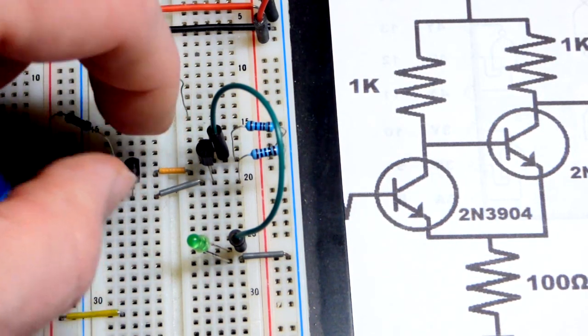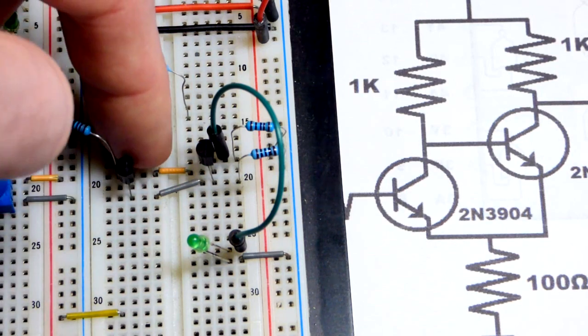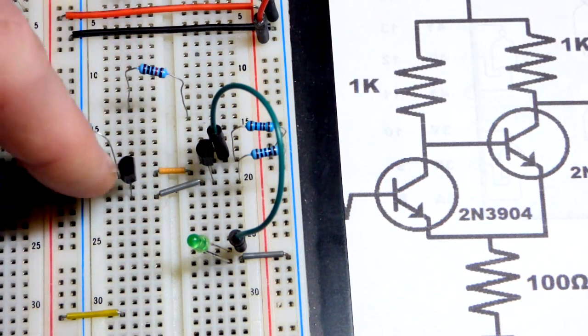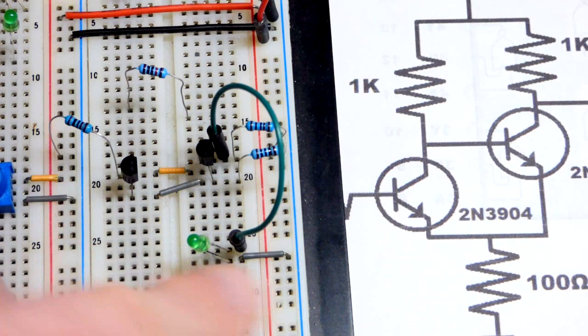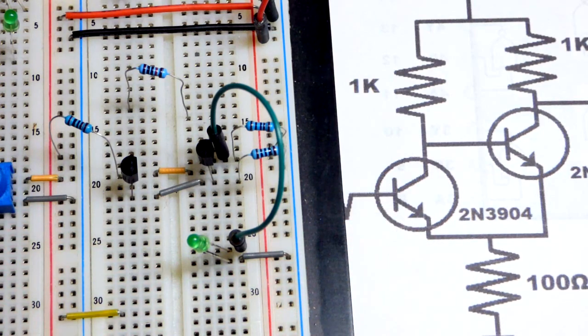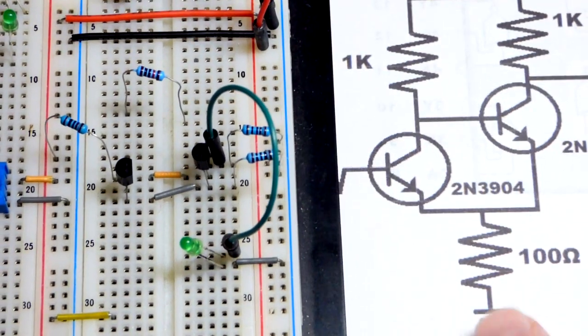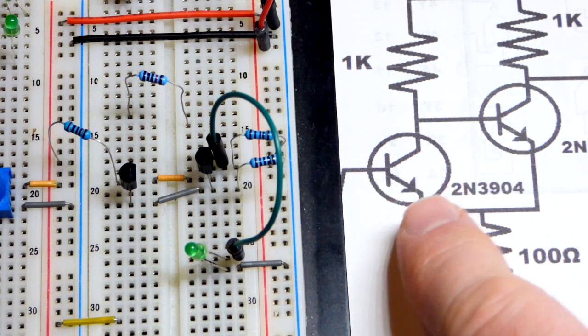I put these jumpers here to fill in these gaps. So the orange jumper and the resistor come to the collector, the base is just floating right now, and then the emitter over there goes to that resistor to ground.